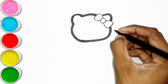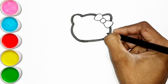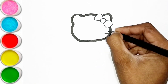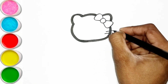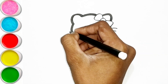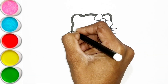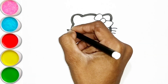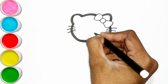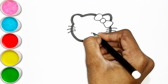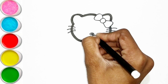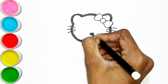Q is for Queen, Q-Q-Queen. R is for Rabbit, R-R-Rabbit. S is for Sun, S-S-Sun. T is for Toad, T-T-Toad.